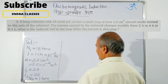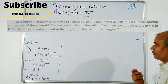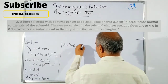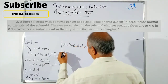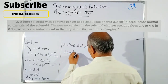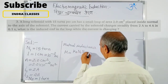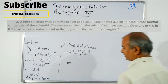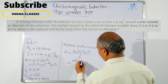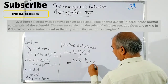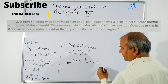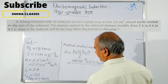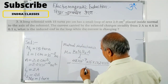We need to find induced EMF, so first calculate mutual inductance. The formula is M = μ₀·N1·N2·A / l. Substituting: μ₀ = 4π×10⁻⁷, N1 = 15, N2 = 1, A = 2.0×10⁻⁴, l = 10⁻².